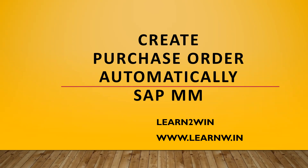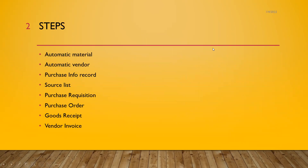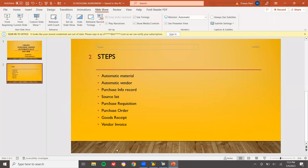Hello everybody, today we are going to create a purchase order automatically in SAP MM. The steps involved are: create a material, create a vendor, create a purchase info record, then create a source list, then create a purchase requisition, purchase order, goods receipt, and invoice. There is one more step wherein I'm going to create the purchase order automatically.